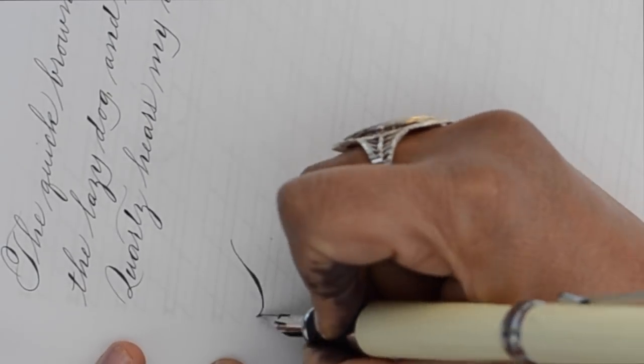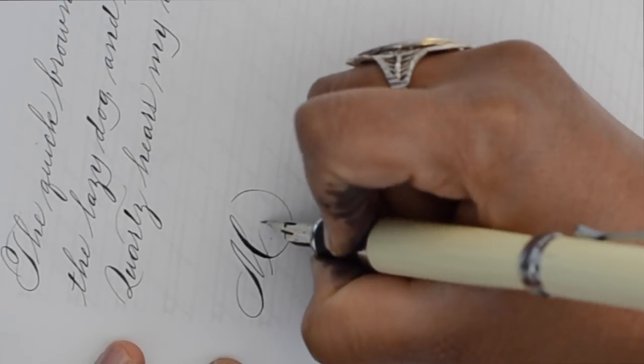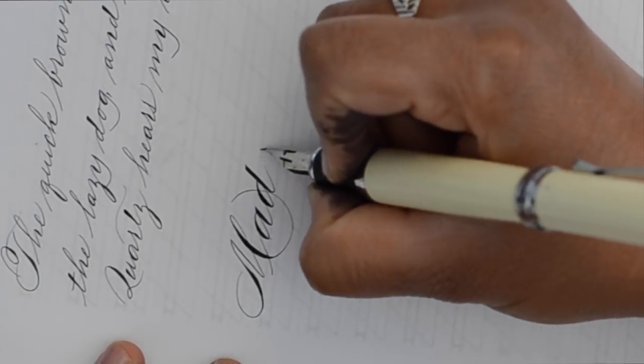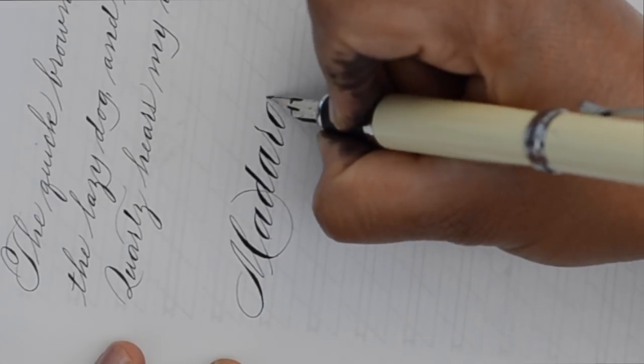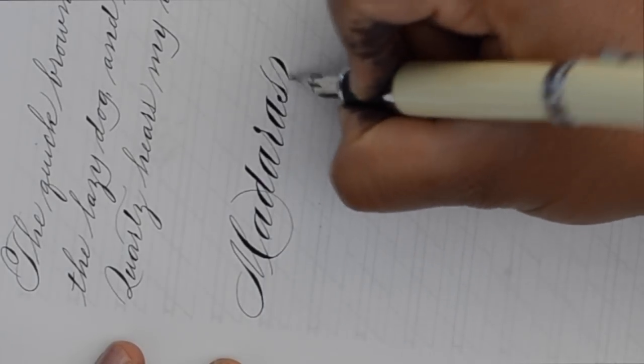For a script with super thick thicks all the way I did sometimes find the ink blobbed at the nib and became kind of messy but I could usually pre-empt that and it wasn't too bad.